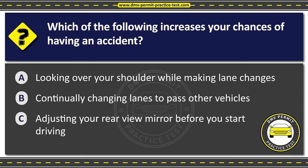Question thirty. You must notify DMV within five days if you Option A: Sell or transfer your vehicle. Option B: Paint your vehicle a different color. Option C: Are cited for a traffic violation. The correct answer is Option A: Sell or transfer your vehicle.